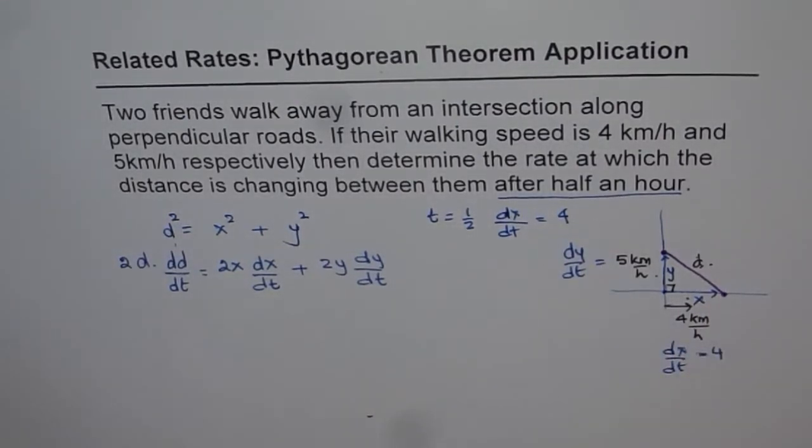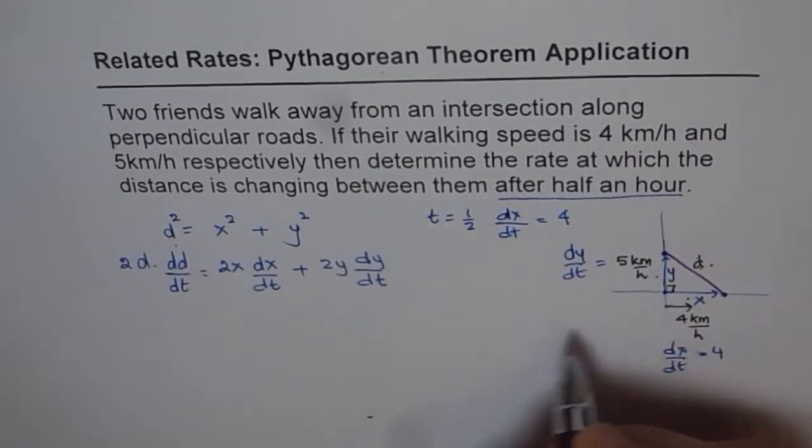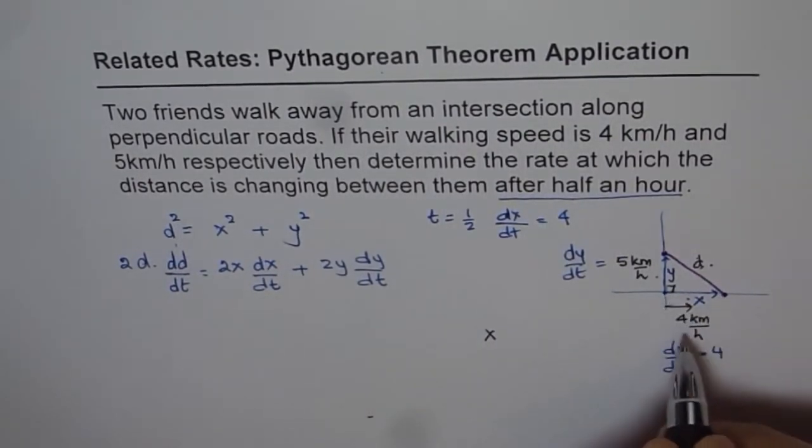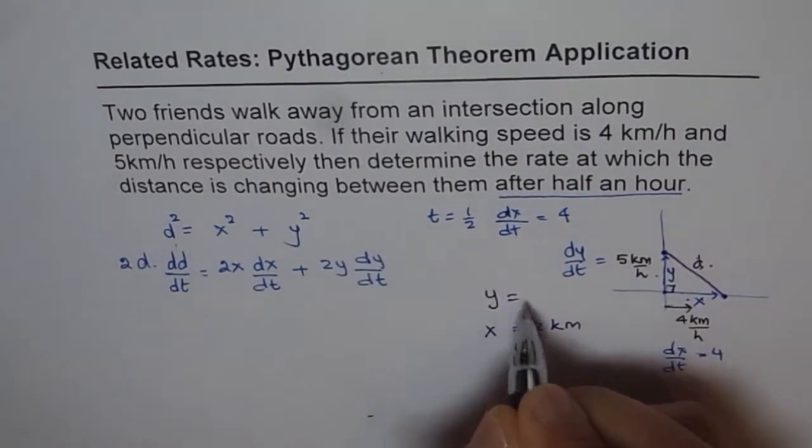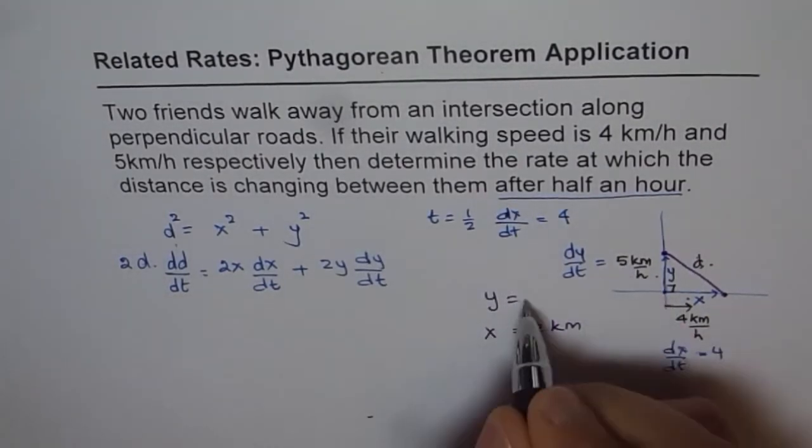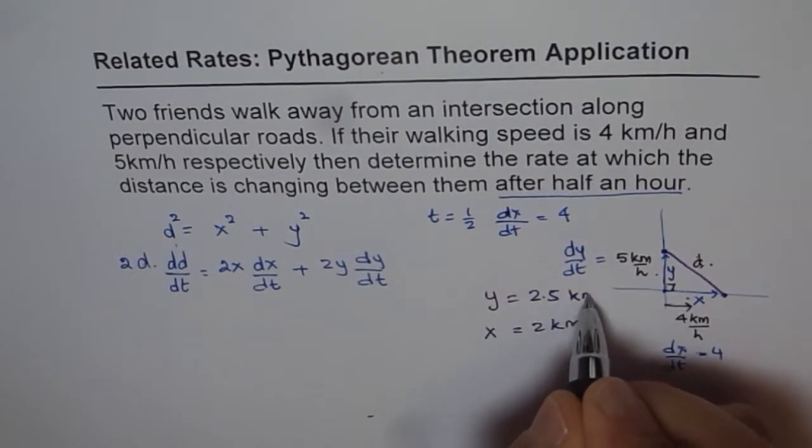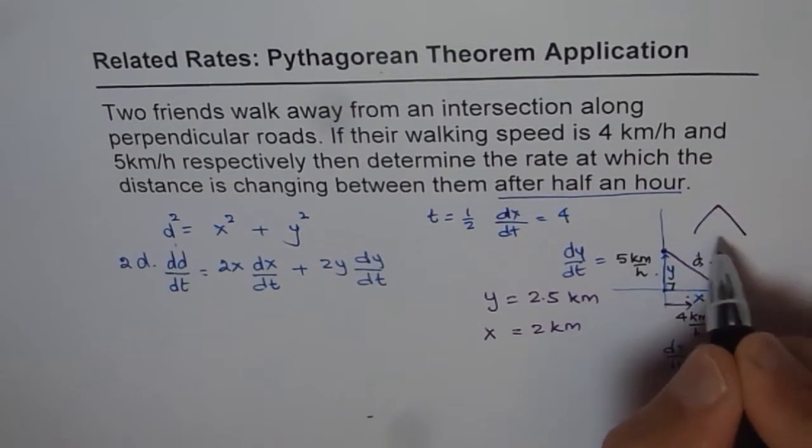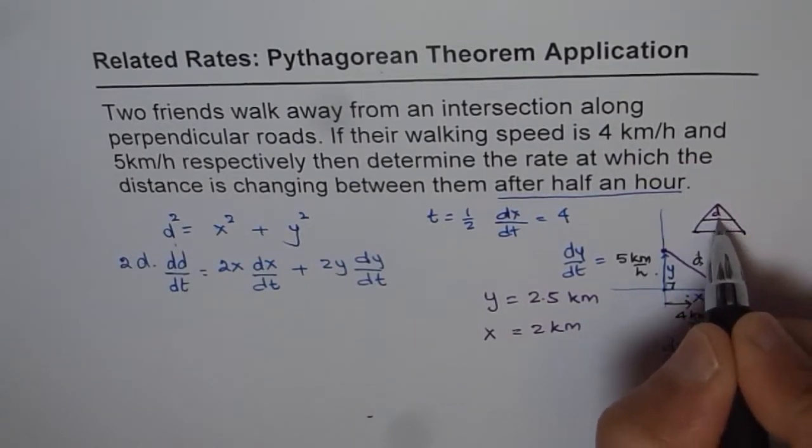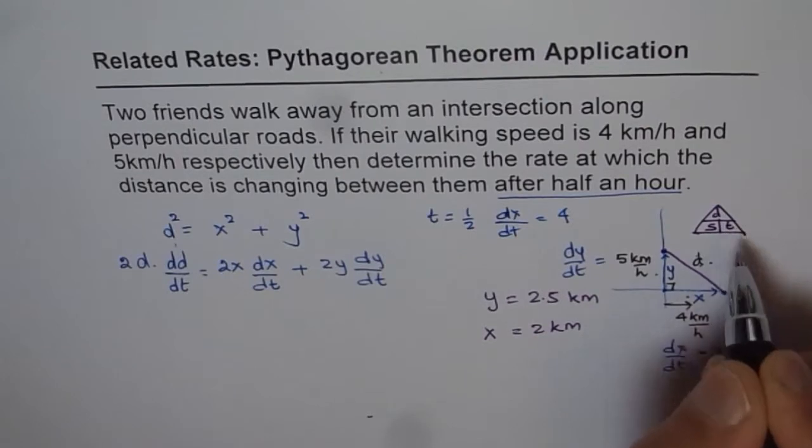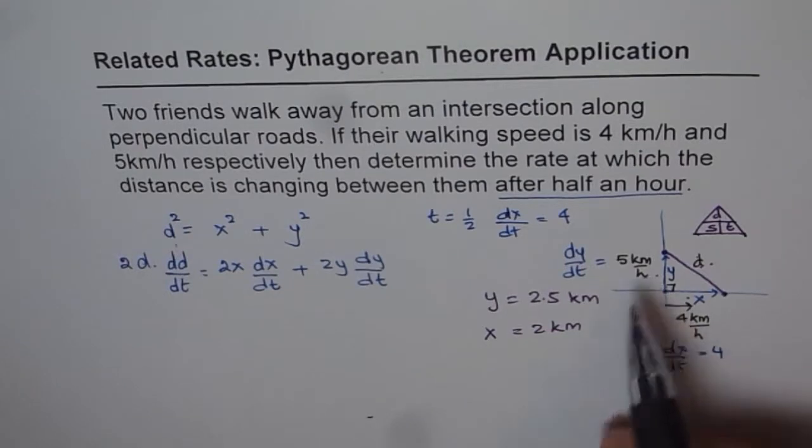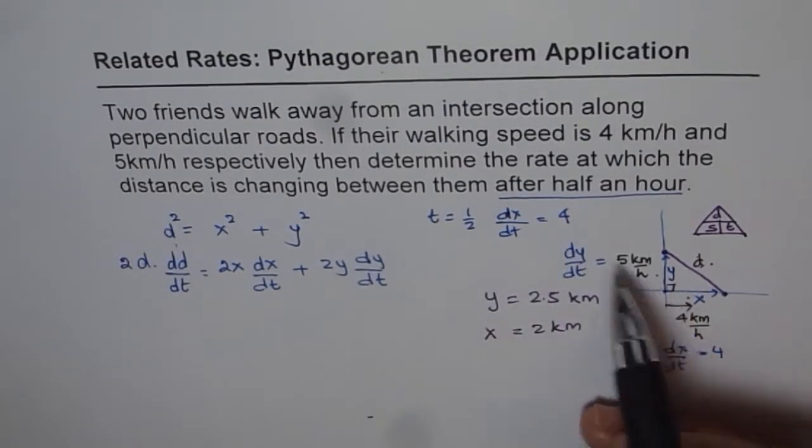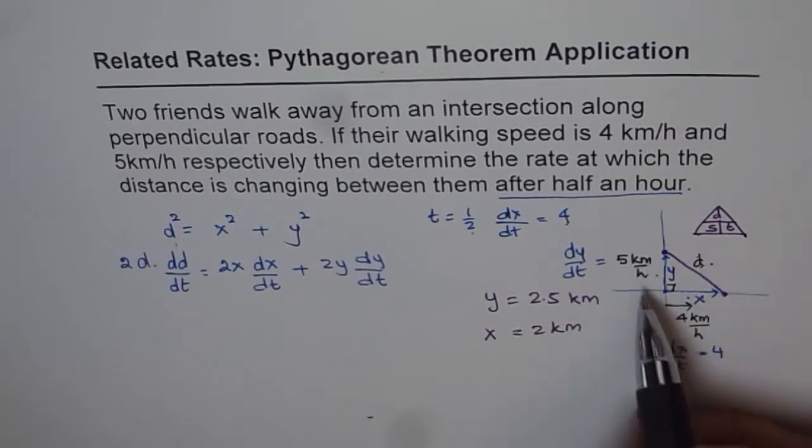So along x axis, the distance traveled will be, in half an hour at 4 kilometers per hour, it will be 2 kilometers. For y, in half an hour, it should be half of 5 kilometers per hour, so it is 2.5 kilometers. We have used this simple distance speed time formula. Distance equals speed into time. Speed is 5 kilometers per hour and time is half an hour, so distance will be 2.5. So you get x and y values.